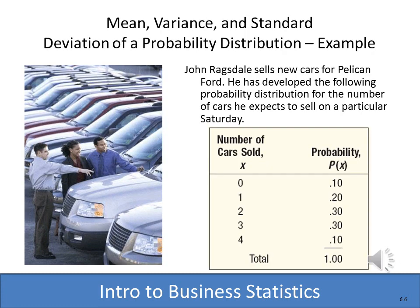Here's an example from the textbook. John sells cars and has come up with a probability distribution of how many cars he expects to sell on any given Saturday, and we'll assume it's impossible for him to sell more than four. The probability of selling zero cars is 0.1, the probability of one car is 0.2, and so on. Again, the probabilities all add up to one. We're going to figure out the mean or expected value of this probability distribution.